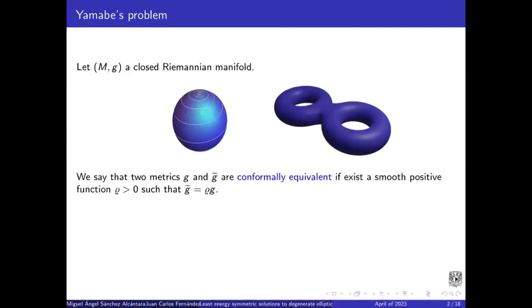We say that two metrics, g and g tilde, are conformally equivalent if there exists a smooth positive function, rho, such that g tilde is the product of rho and g.